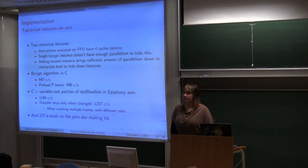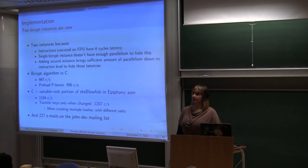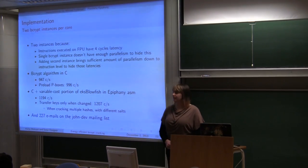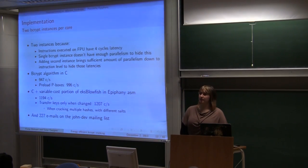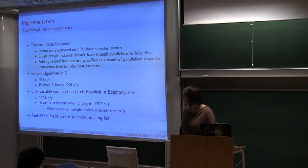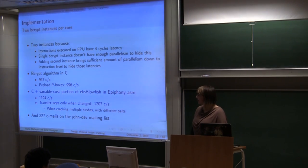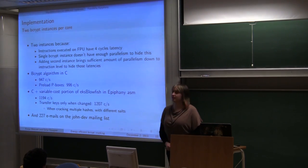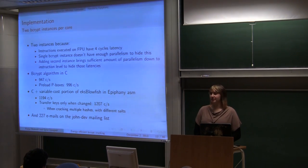Then we did preload of P-arrays. Because it's used in every iteration of replacing S-box entries. And compiler was fine with preloading that in 36 registers. So the performance was almost 1000 cracks per second. And the last part was to do the same scheduling as it was done with one instance. So just do it with two and exploit as much parallelism on instruction level as possible. This resulted with performance of 1200 cracks per second. And we had 227 emails on John the Ripper mailing list to finish this implementation.